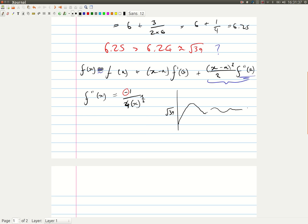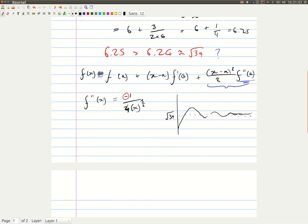Come up and down. And as we go to infinity, we oscillate smaller and smaller, until eventually, at infinity, we reach the square root of 39.